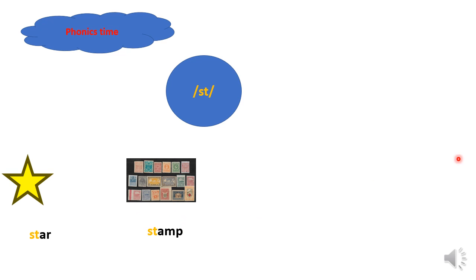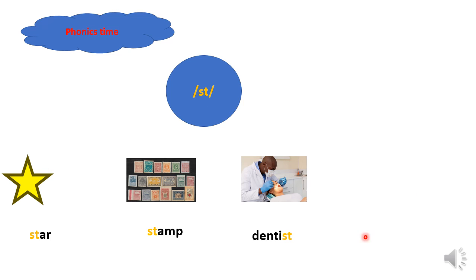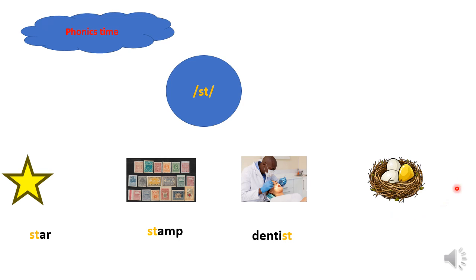After that we have 'dentist'. When our teeth hurt and we have a problem with our teeth, we go to the dentist. The word 'dentist' also has S and T making the 'st' sound — dentist. The next one is 'nest'. A nest is a place where birds live. This is a nest, and here is the word 'nest'.